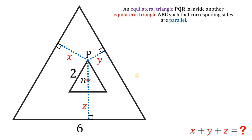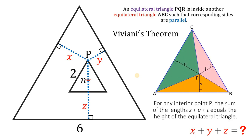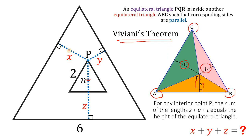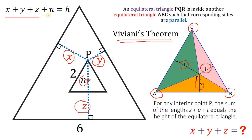Here is the theorem that we need to use to answer this kind of question. Let's introduce Viviani's theorem. Viviani's theorem states that for any interior point P, the sum of the lengths S, U, and T must be equal to the height of the equilateral triangle. So ABC must be an equilateral triangle. Since we're given an equilateral triangle, Viviani's theorem is applicable to this kind of problem. Using Viviani's theorem, we can say that X plus Y plus the sum of N and Z must be equal to the height of this big equilateral triangle having a side length of 6 units. So X plus Y plus Z plus N must be equal to H, which is the height of this large equilateral triangle.